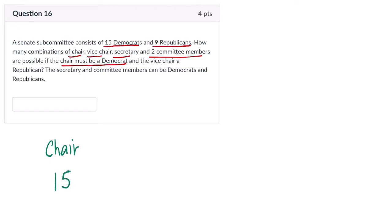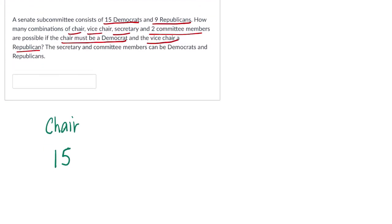Then the vice chair is next, and the vice chair must be a Republican. Well, there are 9 Republicans, so we have a vice chair, and there are 9 Republicans that we could pick. We're choosing one of them, so there's just 9 to pick from.